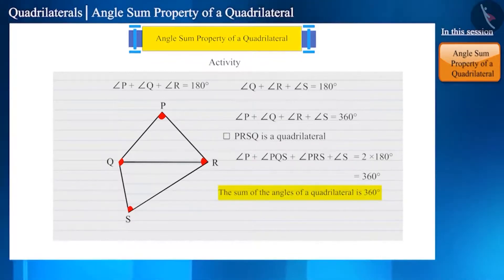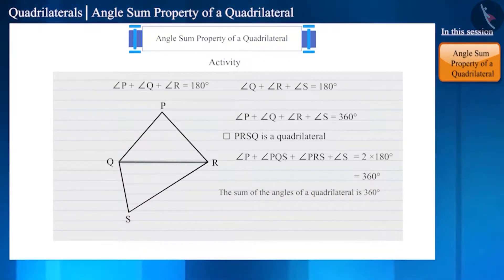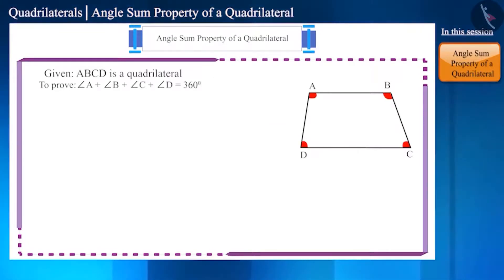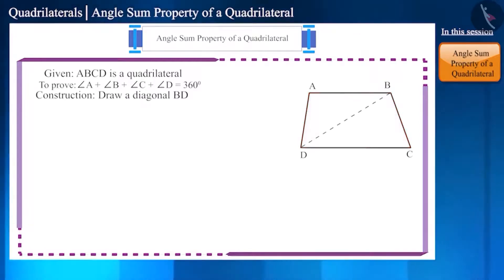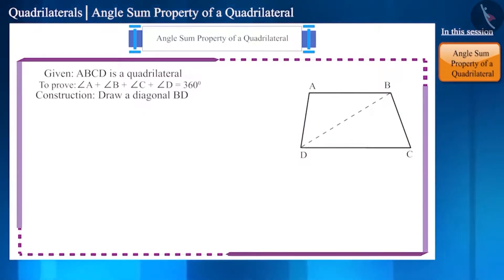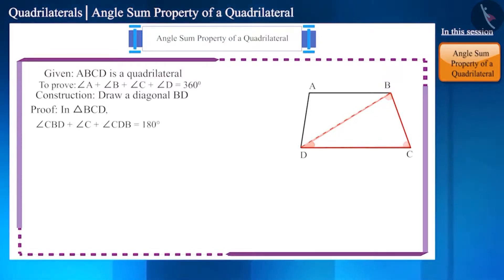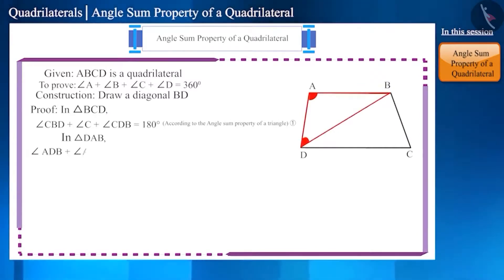This is what we call the angle sum property of a quadrilateral. We tested this property through an activity; let us now try to prove it mathematically. Let's make a quadrilateral ABCD. We have to prove that angle A plus angle B plus angle C plus angle D is equal to 360 degrees. By drawing a diagonal of this quadrilateral, let's divide it into two triangles. We can create either diagonal AC or BD. Now we have two triangles: triangle BCD and triangle DAB. In triangle BCD, angle CBD plus angle C plus angle CDB equals 180 degrees according to the angle sum property of a triangle.